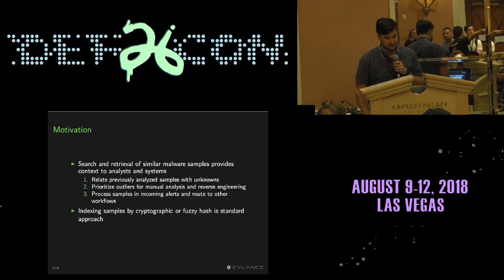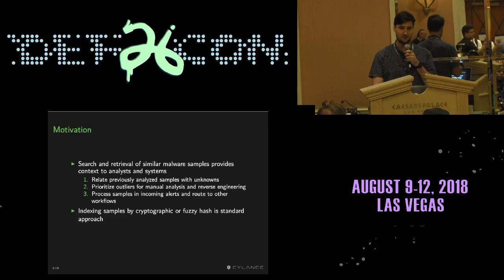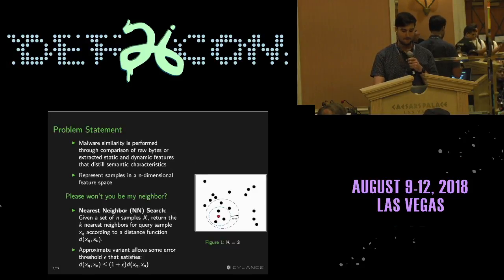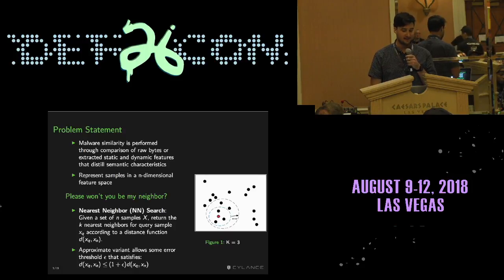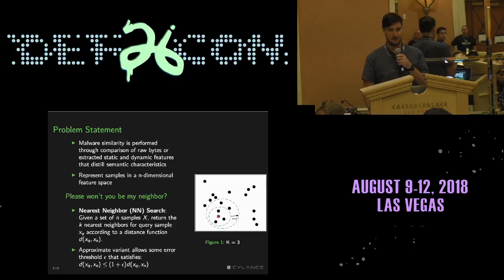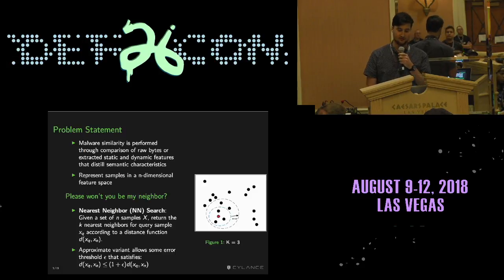Historically this has been done with big databases of cryptographic hashes. Fuzzy hashing, notably SSDeep, is also still a standard and de facto approach. If we consider malware similarity as comparison of raw bytes or extracted static and dynamic features that distill semantic characteristics, we can represent them in an n-dimensional feature space and feed that into nearest neighbor search algorithms.